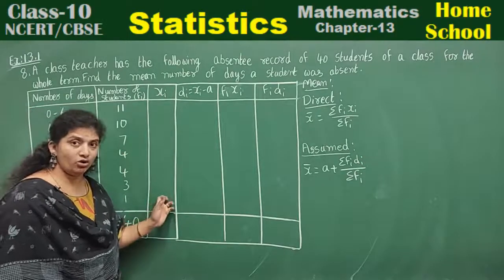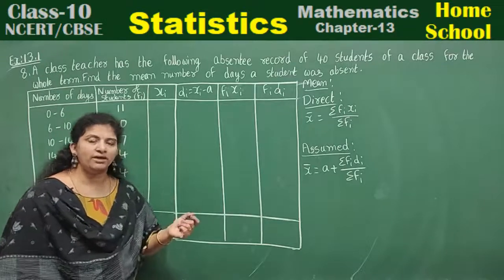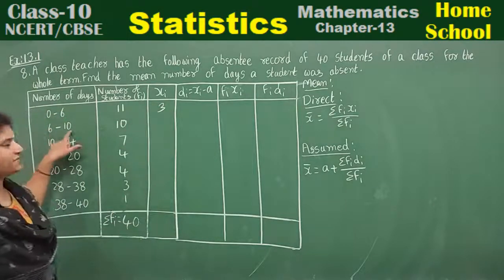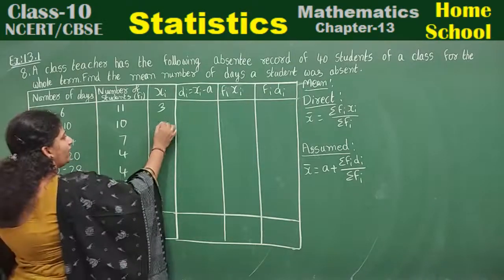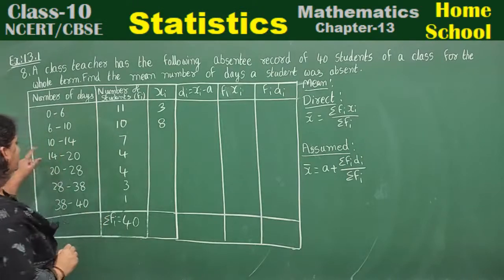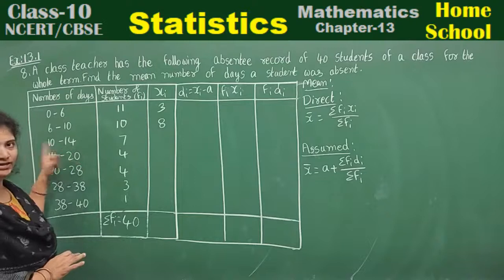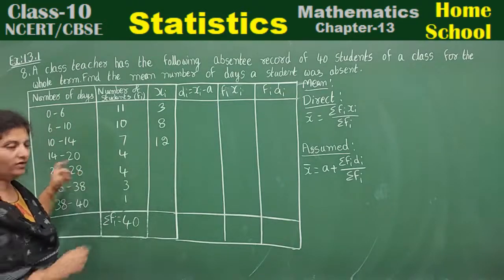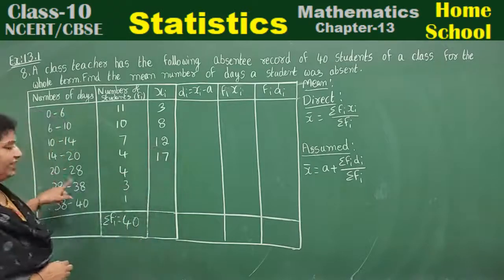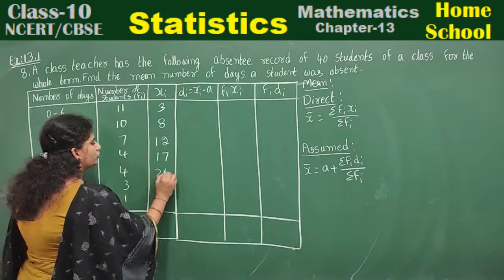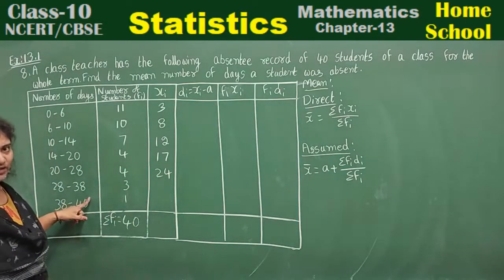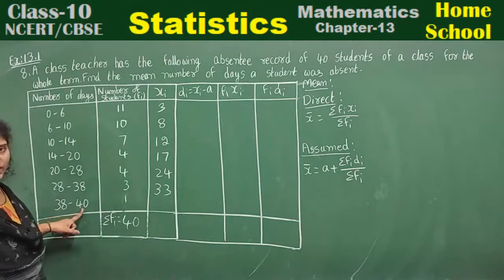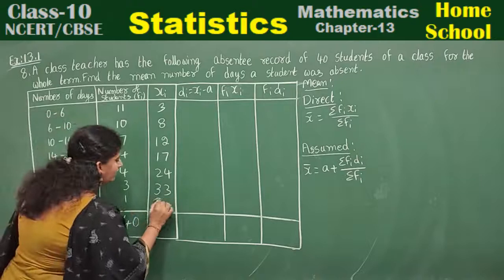Next, find the class mark xi using upper limit plus lower limit divided by 2. 0 plus 6 equals 6 divided by 2 is 3. 6 plus 10 is 16 divided by 2 is 8. 10 plus 14 is 24 divided by 2 is 12. 14 plus 20 is 34 divided by 2 is 17. 20 plus 28 is 48 divided by 2 is 24. 28 plus 38 is 66 divided by 2 is 33. 38 plus 40 is 78 divided by 2 is 39.